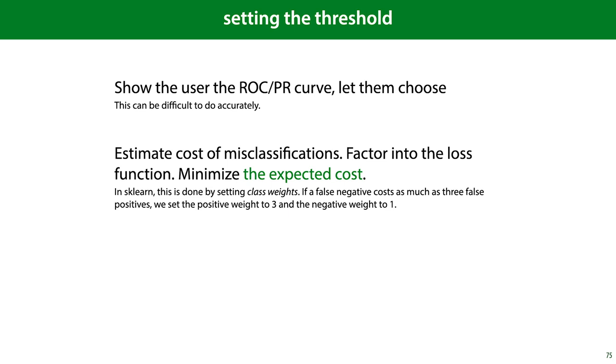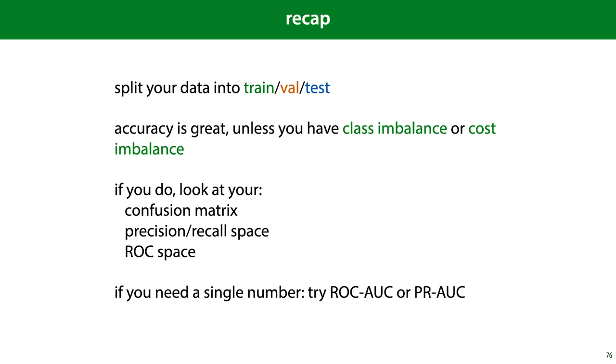Of course once you've picked a classifier that gives you a good ROC or a good PR curve you may still need to choose which threshold to set when you use the classifier in production. One thing you can do is to simply show the user the ROC or PR curve and let them choose but that can be difficult to do and to interpret accurately. Another thing you can do is to estimate the cost of misclassification factor it into the loss function and then minimize the expected cost.